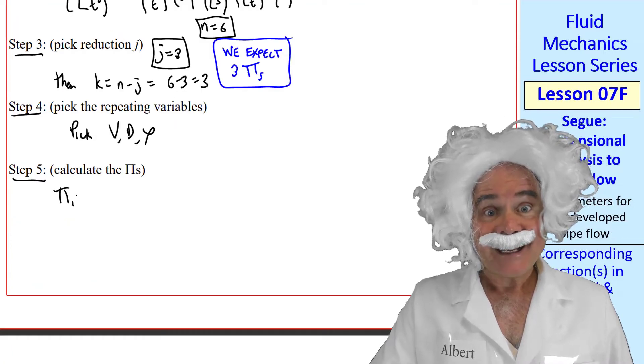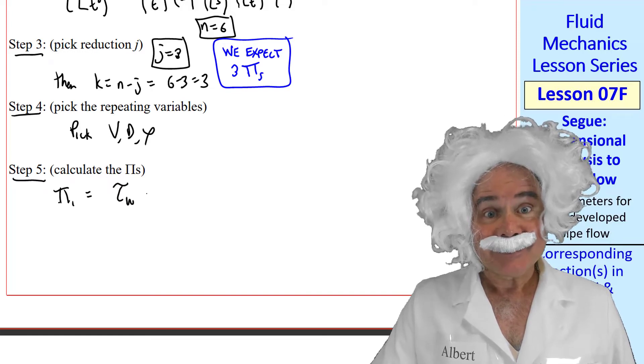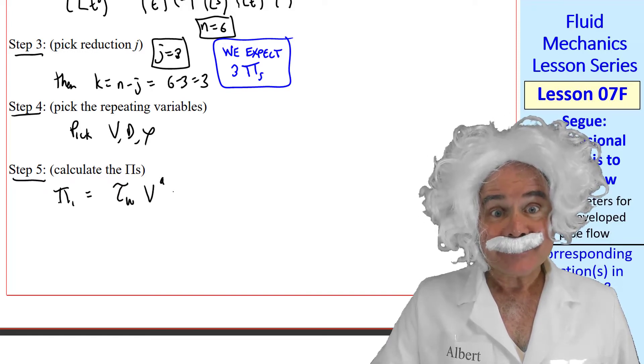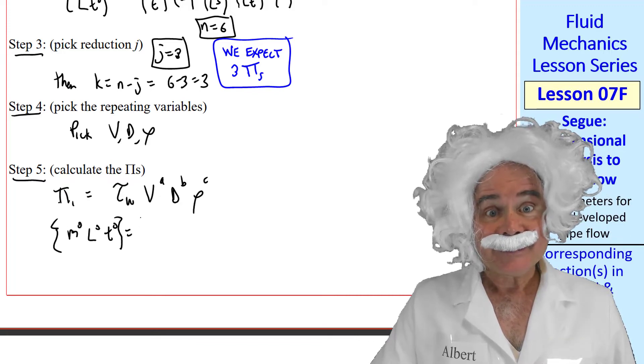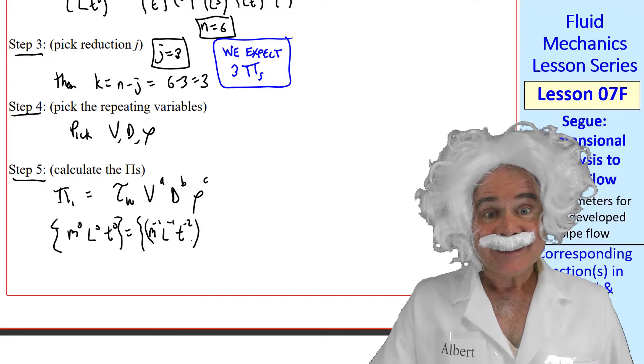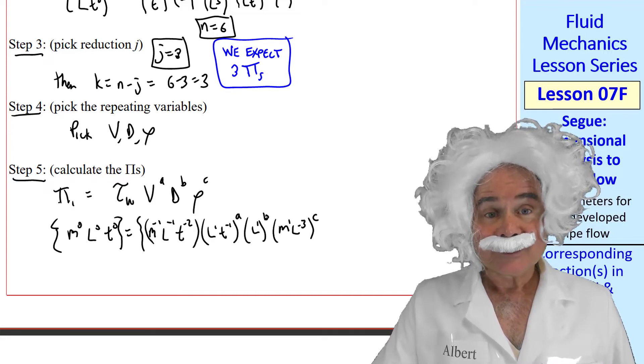Step five. Generate the pies. Pi one is the dependent pi. We set it to tau w on the three repeating variables, raised to exponents. Then we write the dimensions of each variable. Pi one is dimensionless. And then we have tau w, v to the a, d to the b, and rho to the c.